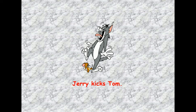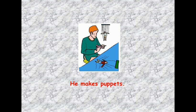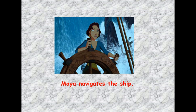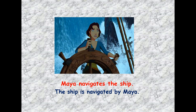'Jerry kicks Tom' becomes 'Tom is kicked by Jerry.' 'He makes puppets' becomes 'Puppets are made' — and here, since we don't know who this person is, we can choose whether to add 'by him' or not. 'Maya navigates the ship' becomes 'The ship is navigated by Maya.'